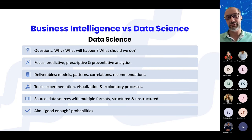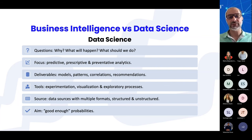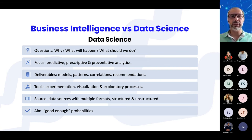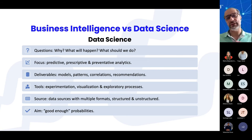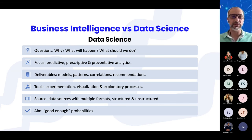The typical deliverables of data science are models — regression models, machine learning models, patterns, correlations, and recommendations. It is not as easy to find these in dashboards, but there are ways to bring these conclusions to decision makers in an understandable format. The tools involve experimentation, visualization, and exploratory processes.